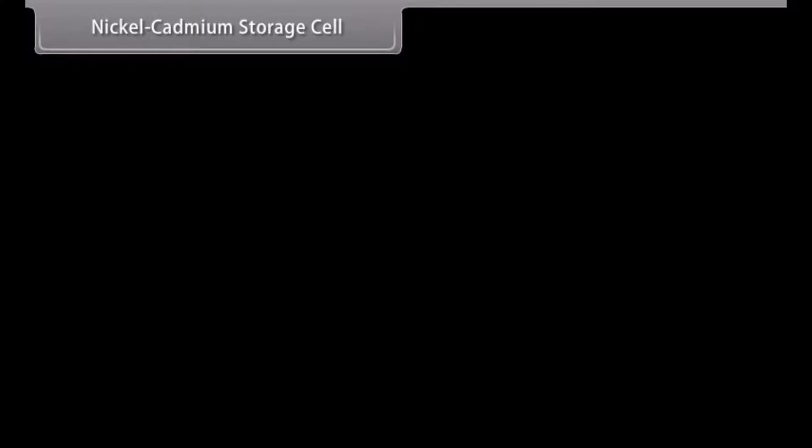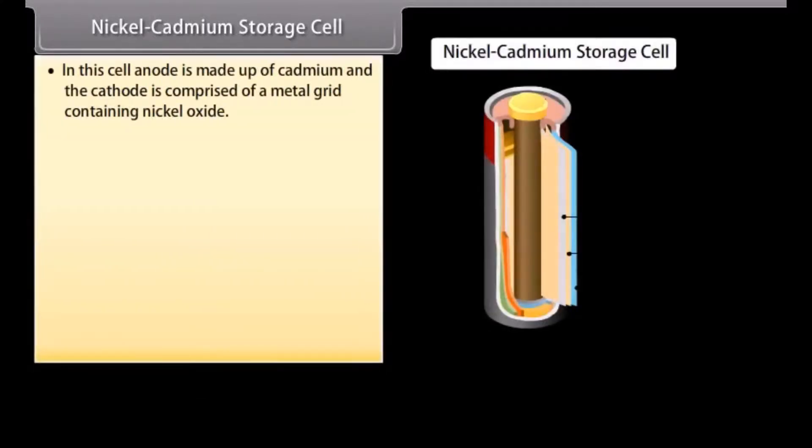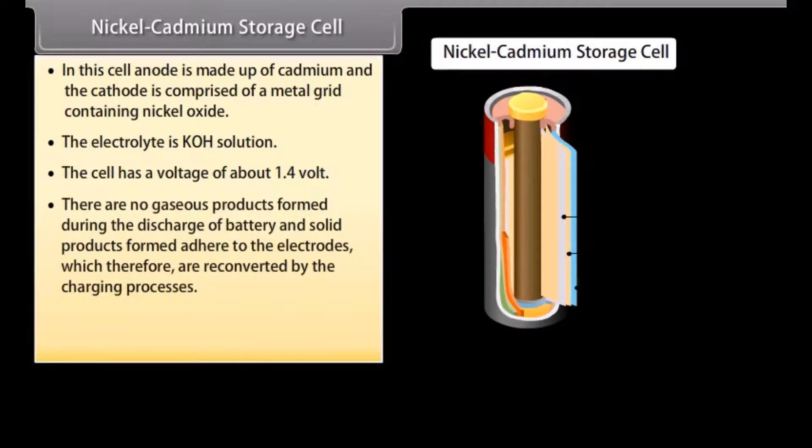Nickel-cadmium storage cell. In this cell, anode is made up of cadmium and the cathode is comprised of a metal grid containing nickel oxide. The electrolyte is KOH solution. The cell has a voltage of about 1.4 volts. There are no gaseous products formed during the discharge of battery and solid products formed adhere to the electrodes, which therefore are reconverted by the charging processes. These cells are extensively used in electronic watches and calculators.